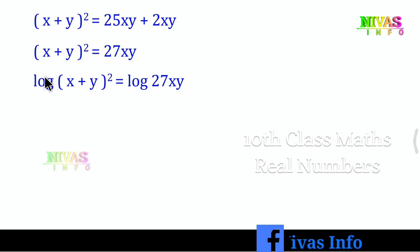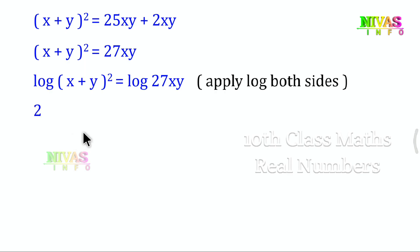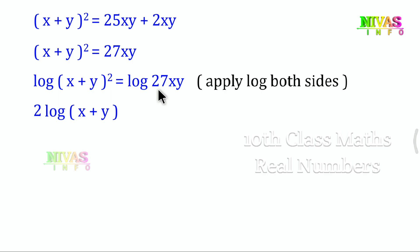Taking log: log(x+y)² = log(27xy). On the left side, bring the exponent forward: 2 into log(x+y). On the right side, 27xy has multiple values — we apply the multiplicative rule.